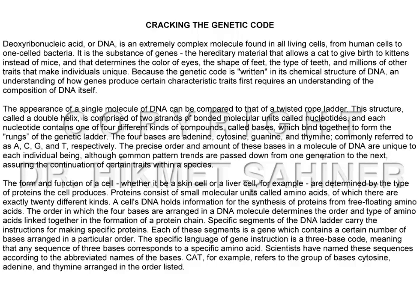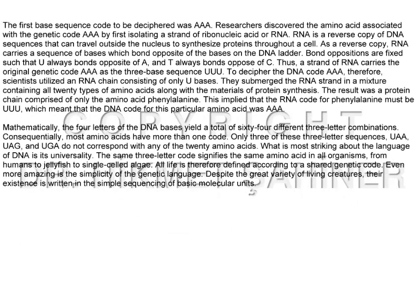Scientists have named these sequences according to the abbreviated names of the bases. CAT, for example, refers to the group of bases cytosine, adenine, and thymine arranged in the order listed. The first base sequence code to be deciphered was AAA. Researchers discovered the amino acid associated with the genetic code AAA by first isolating a strand of ribonucleic acid, or RNA. RNA is a reverse copy of DNA sequences that can travel outside the nucleus to synthesize proteins throughout a cell. As a reverse copy, RNA carries a sequence of bases which bond opposite of the bases on the DNA ladder. Bond oppositions are fixed such that U always bonds opposite of A, and T always bonds opposite of C. Thus, a strand of RNA carries the original genetic code AAA as the three-base sequence UUU.